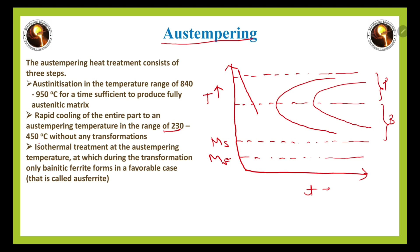We perform rapid cooling into the bainitic region and then hold there until we achieve a fully bainitic structure, followed by air cooling. The final result is a fully bainitic structure.